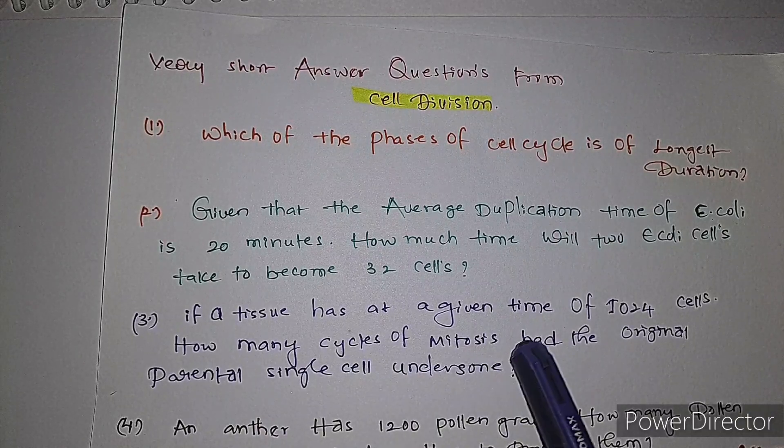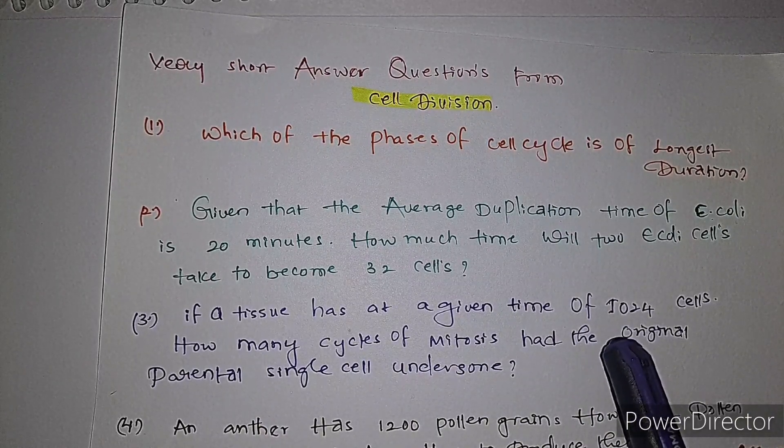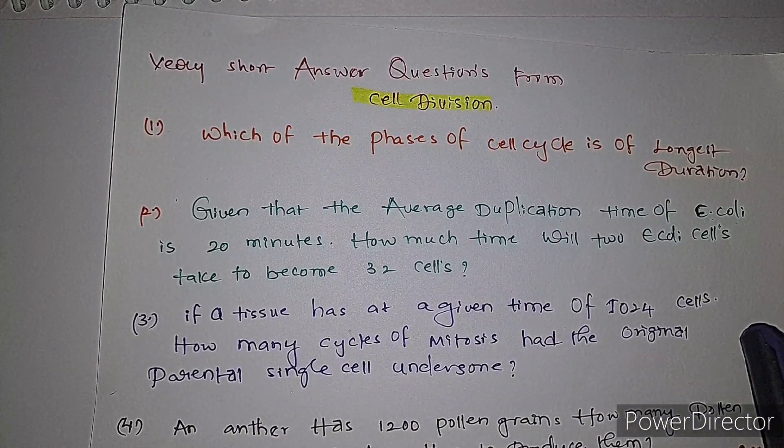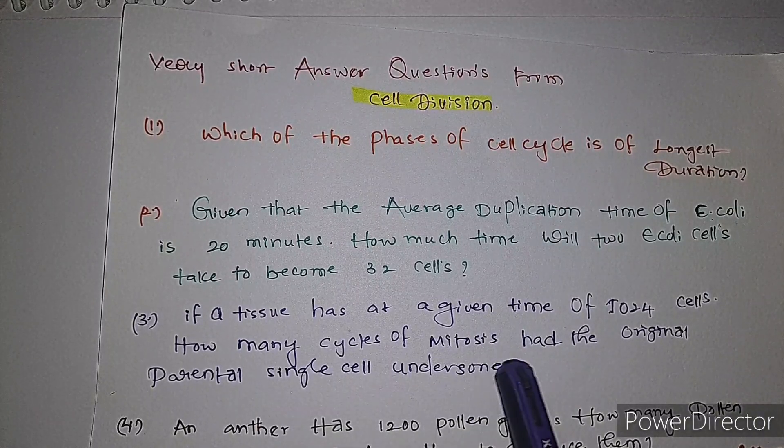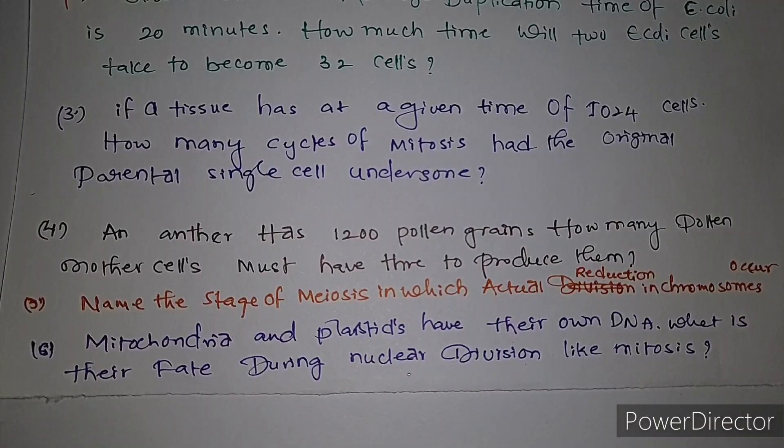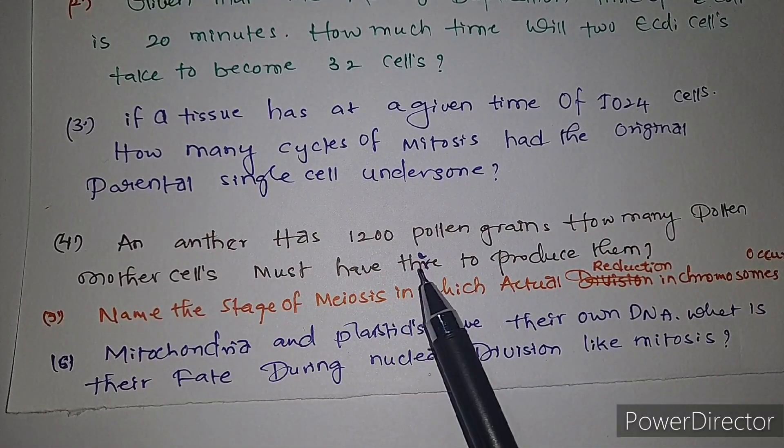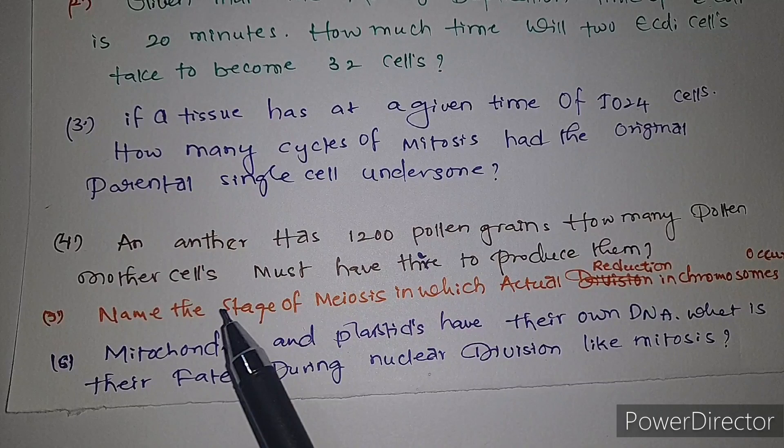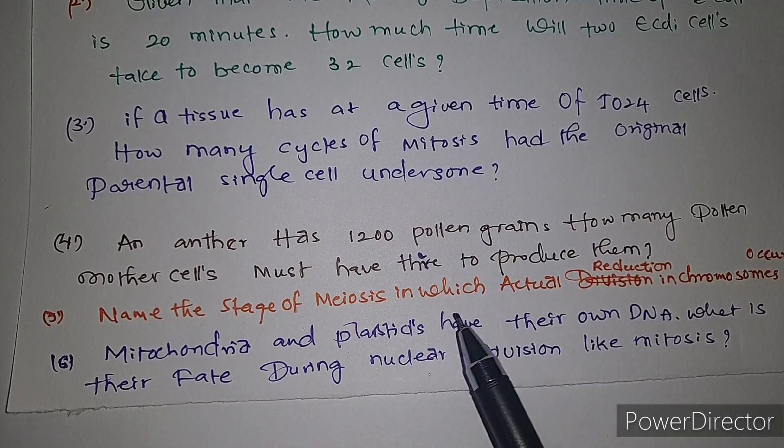Fourth question: an anther has 1200 pollen grains. How many pollen mother cells must have been there to produce them? Fifth question: name the stage of meiosis in which actual reduction in chromosome number occurs.